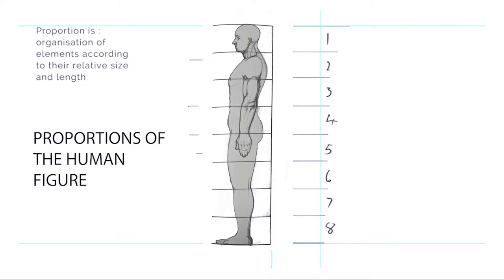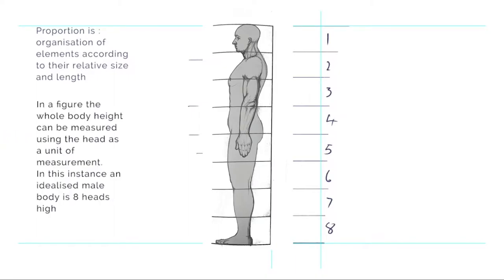Now if we look at proportion, that is organization of elements according to their relative size and length, which means we're going to use a part of the body to measure the other part of the body.